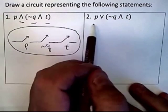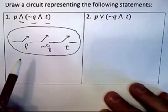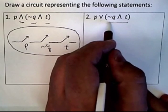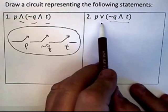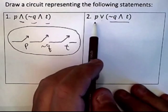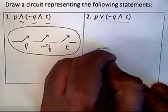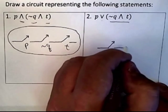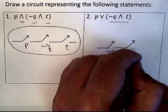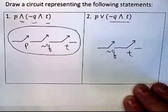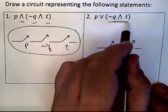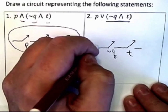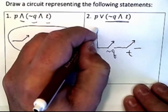Now the second problem is somewhat more difficult because you have an OR and an AND, so everything's not going to be all in series nor all in parallel. What you do notice is the parenthetical compound statement is an AND, and it's OR'd with P. So let's do the AND first. You've got the statement NOT Q ANDed — which means it's in series — with the statement T. So you get something that looks like that.